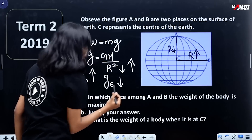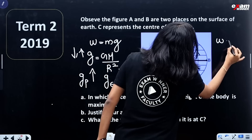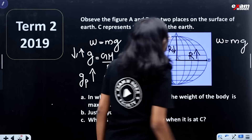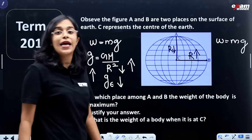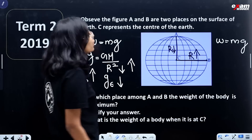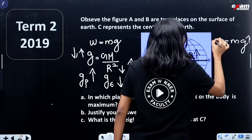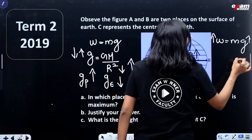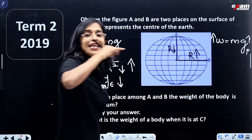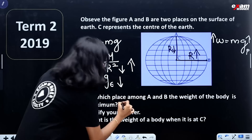Since W = M × g, and g is greater at the pole, the weight of the body is greater at the pole. So the answer points to the pole.